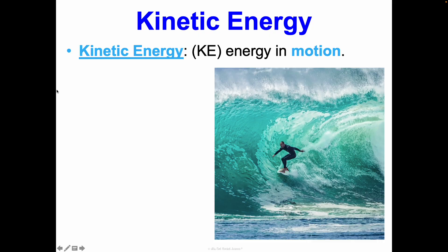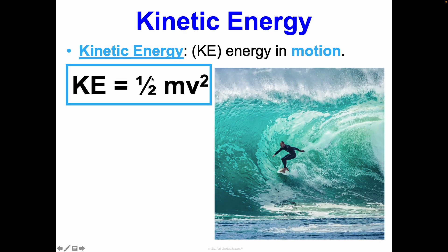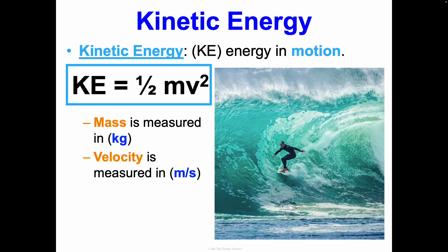So again, kinetic energy is energy in motion. To calculate it, the equation is one half MV squared, where M is our mass measured in kilograms and V is our velocity measured in meters per second. So notice that because this is going to get squared, that gives us kilograms times meters per second squared, which is equal to one joule and kinetic energy is a form of energy. Thus it's going to be measured in joules.